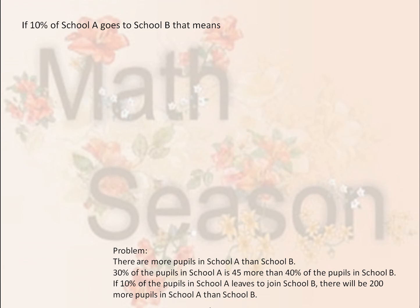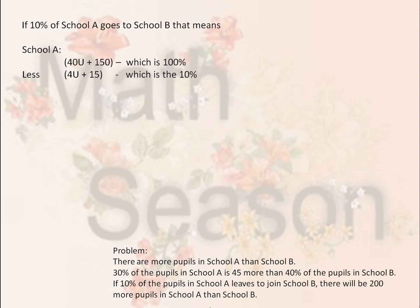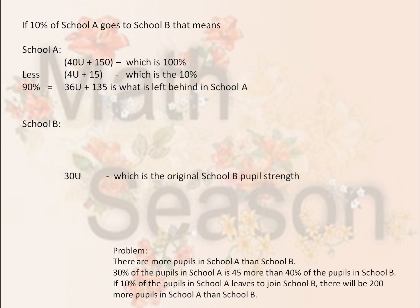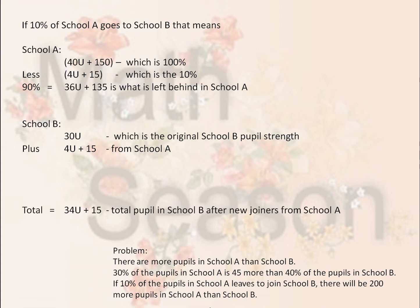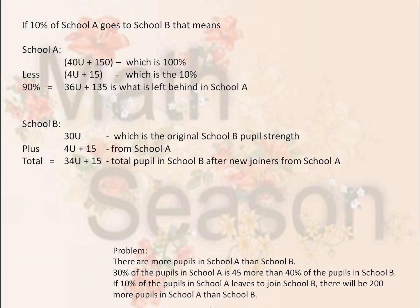If 10% of School A goes to School B, it means School A's 100% — which is 40U plus 150 — less the 10% which is 4U plus 15, gives you the 90% that stays back in School A, equal to 36U plus 135. For School B, you have the original 30U and you add the 4U plus 15 which comes from School A, giving you 34U plus 15 — the total pupils in School B after the new joiners.